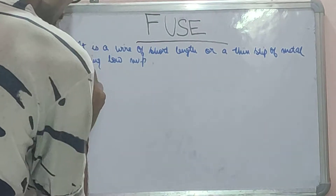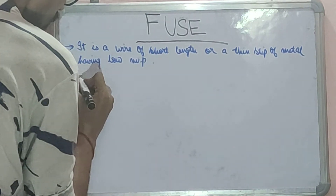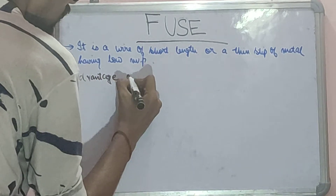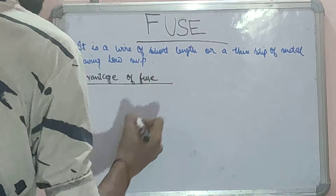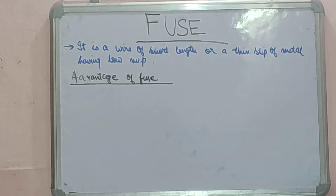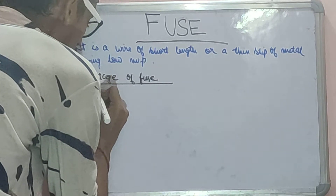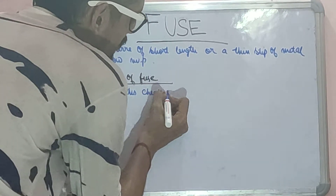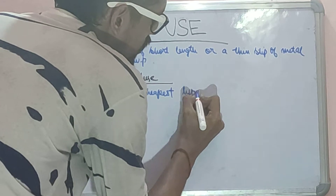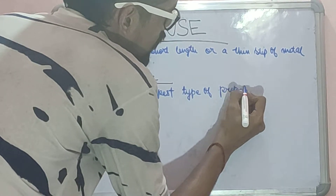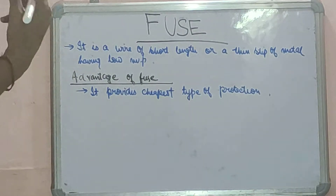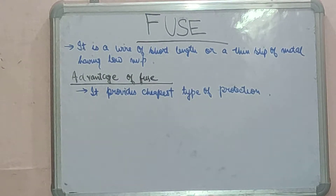Let us get into the advantages of the fuse. The first advantage is it provides the cheapest type of protection. Fuse is present everywhere — on almost every electrical board and any equipment, fuse is a must. So it is the cheapest type of protection that is available.